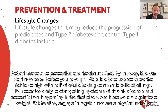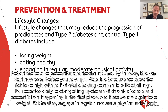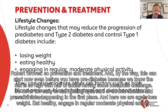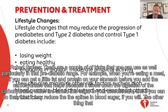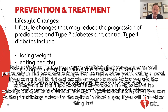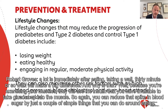Prevention and treatment can start now, even before you have pre-diabetes, because we know the risk is so high. With half of adults having some metabolic challenge, it's never too early to start getting upstream of chronic disease. Lose weight, eat healthy, engage in regular moderate physical activity. There are a couple of tricks that you can use as well, particularly in that pre-diabetic range. For example, when eating a meal, if you can get a little fat and protein on your stomach before you add the carbohydrates, that helps because it slows down the digestion of the carbohydrates, which are turned into sugar in your bloodstream — and it may reduce the spikes in blood sugar.